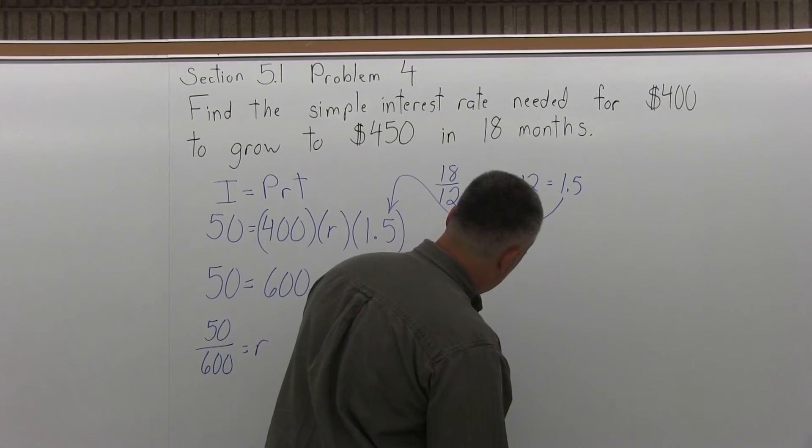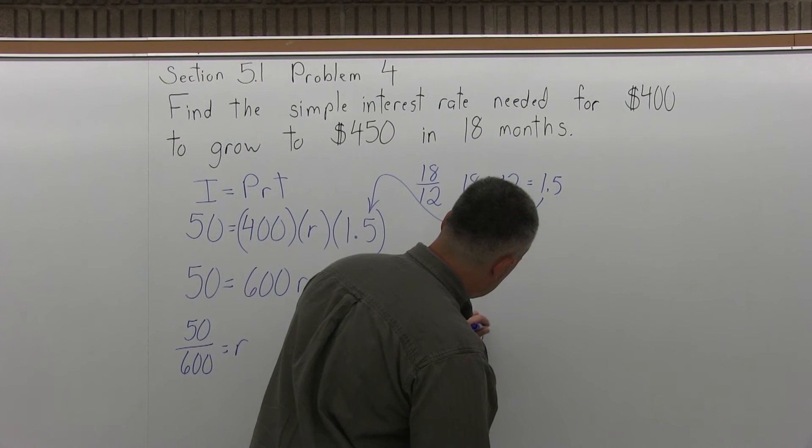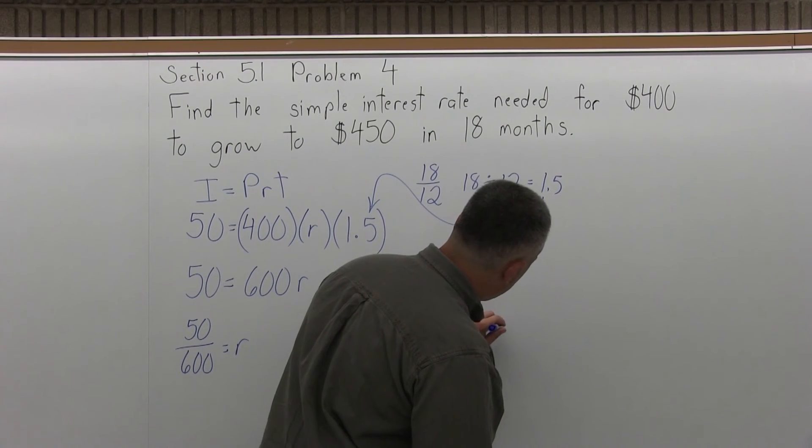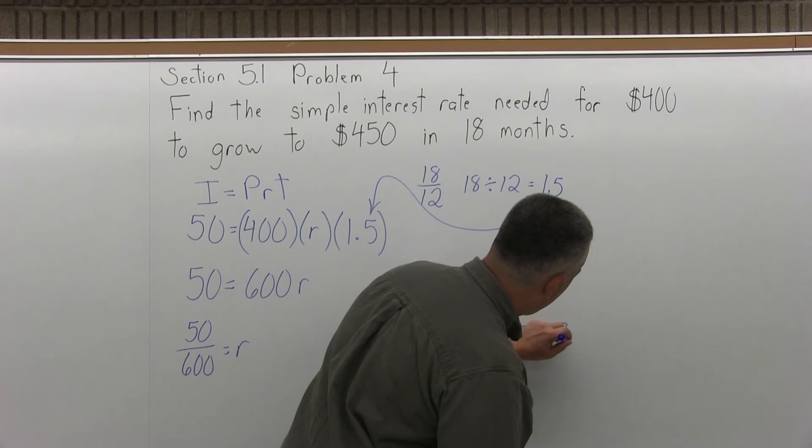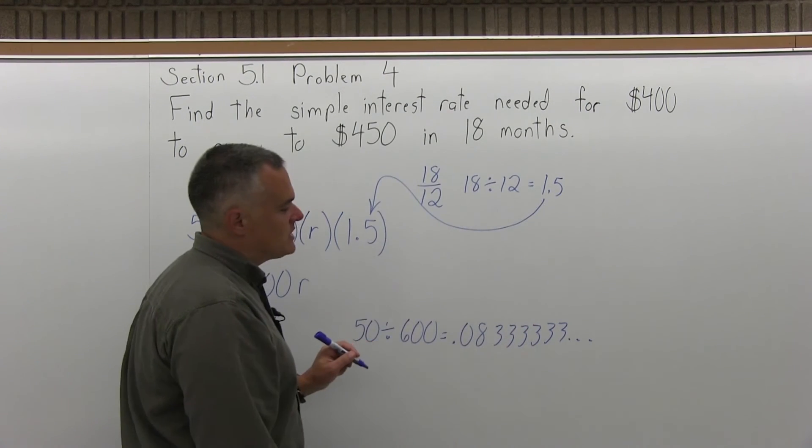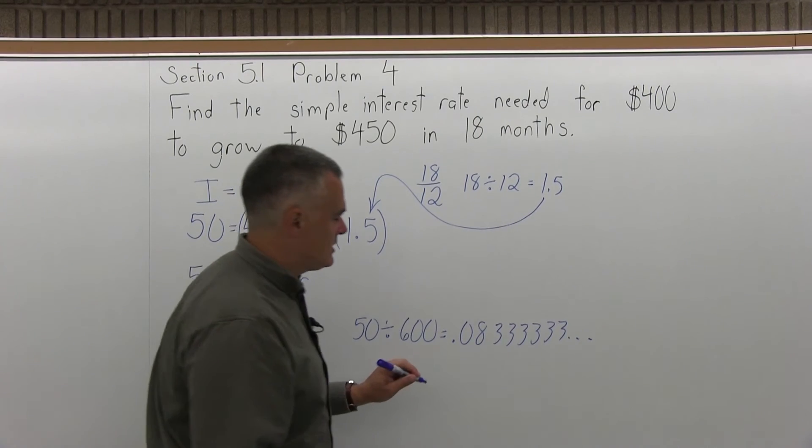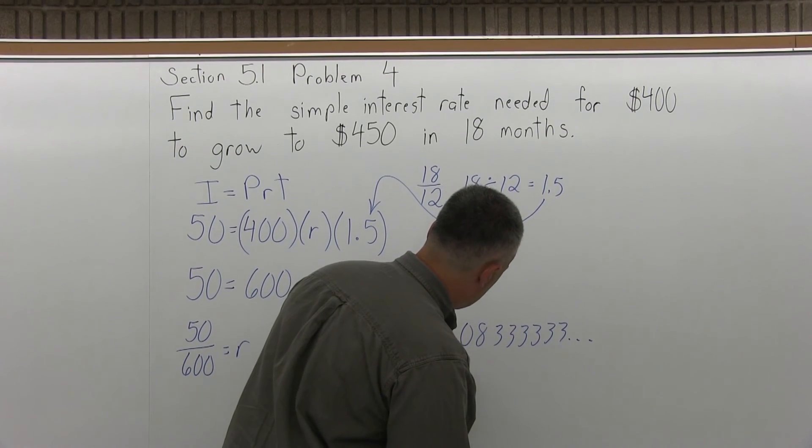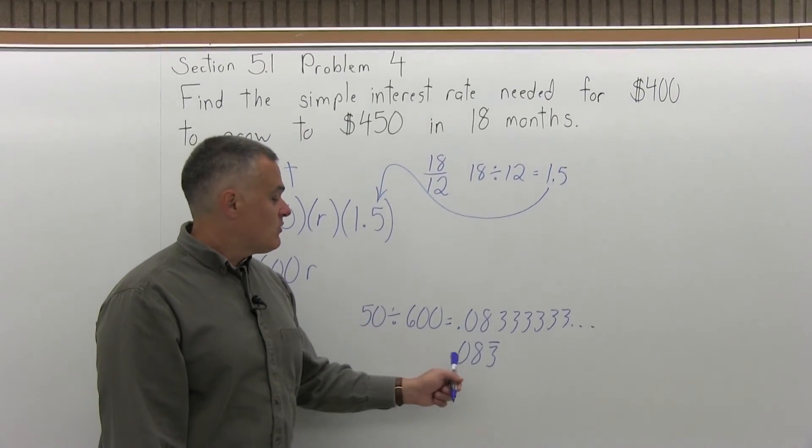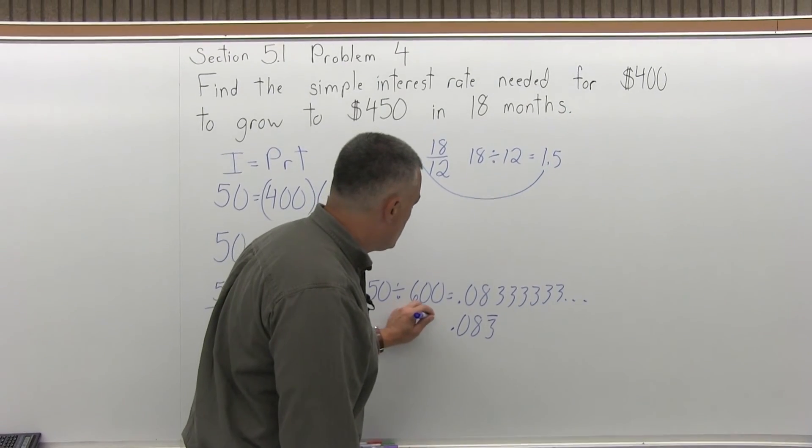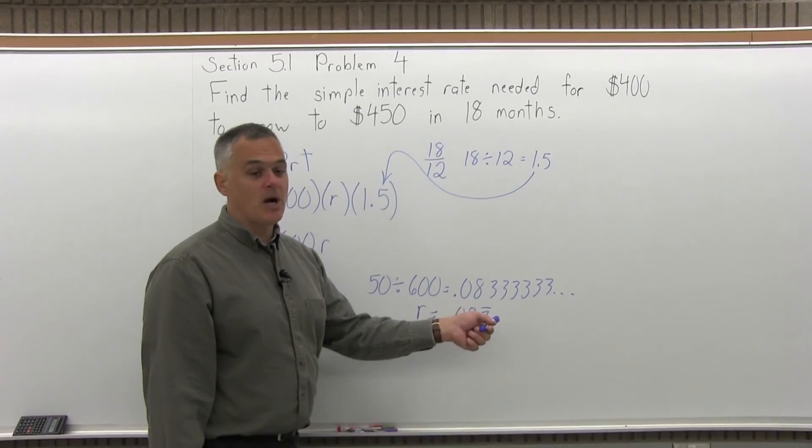and I just happen to be good at reducing fractions, it should be .08 and then the 3's should continue forever. Now when you have a situation like this, instead of writing so many 3's and a dot dot dot, the standard notation in any math class is just put a line over the decimal that repeats. That means it never ends. So you can write your answer as R equals .083 with the bar over the 3,